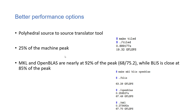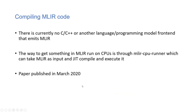The author briefly shows that a polyhedral source-to-source translator gets 25% of the machine peak. As seen in the earlier graph, MKL and OpenBLAS are at nearly 92% of the machine peak, while BLIS is also close. The experiments were conducted by writing MLIR code and running it through the MLIR CPU runner, which JIT-compiles and executes the code.